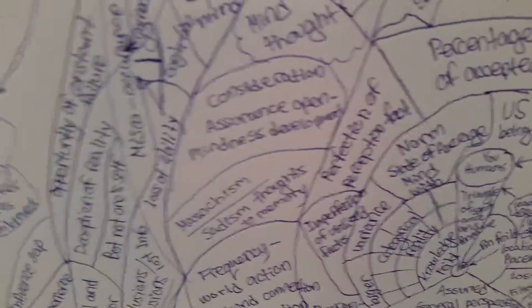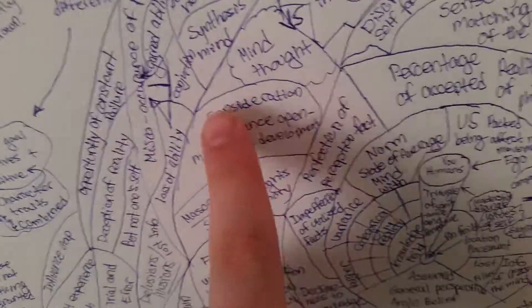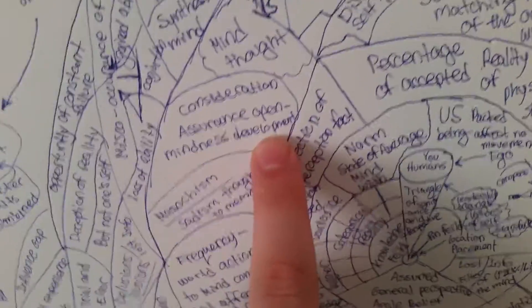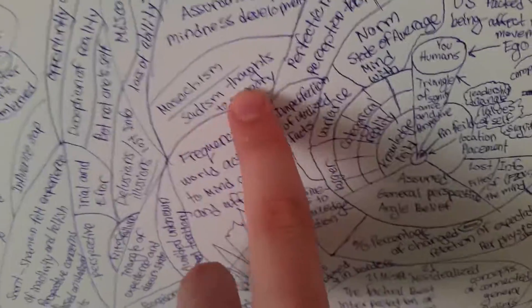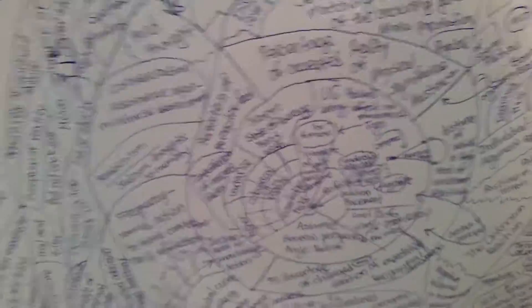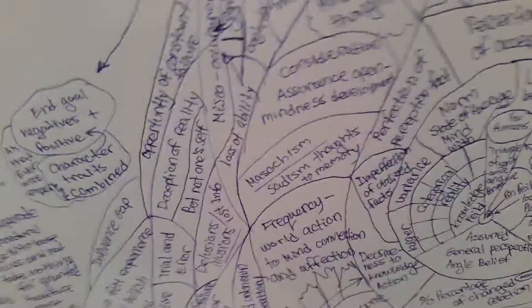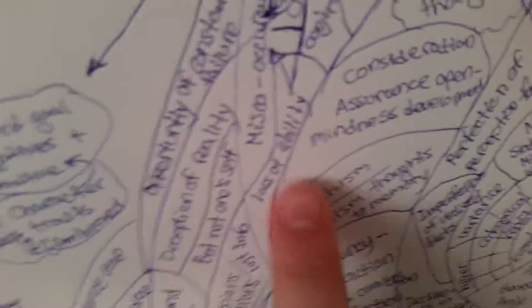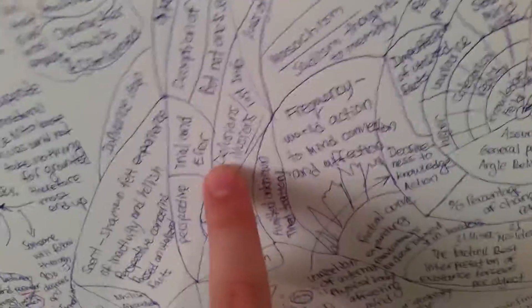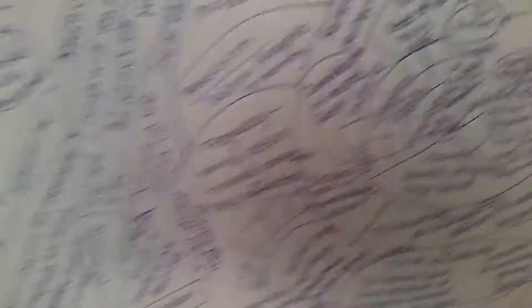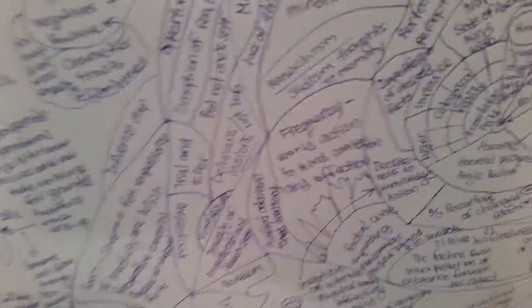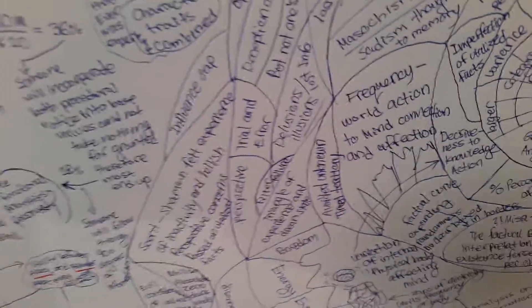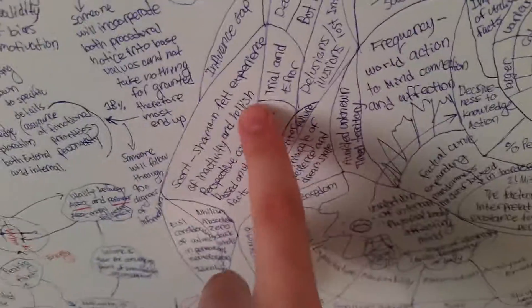So let's say we are trying to go for being a perfectionist. We will run into this problem: consideration assurance, open-mindedness development mind thought. Okay, that's not really a problem, but then we have masochism, sadism thoughts to memory. So then as a perfectionist we will have sadism thoughts to memory unless we bypass that. And if we bypass that, then where are we going to? Loss of ability. We bypass that one, let's say for example the illusions, illusions, lost info. We could be not gaining a lot of info if we're not going to get a lot of mistakes because we haven't really tried. So we're going to go for trial and error, as we go for trial and error.